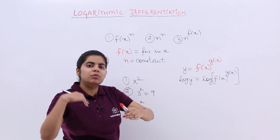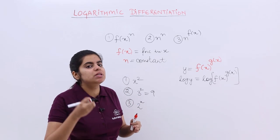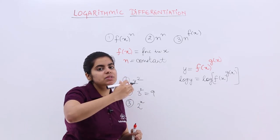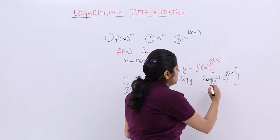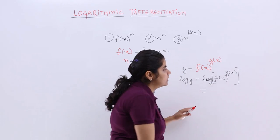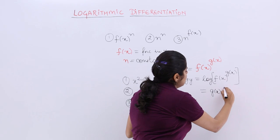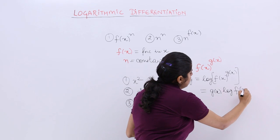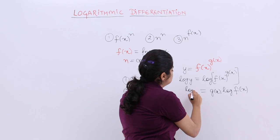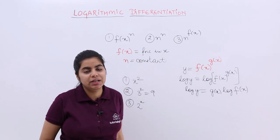Now you know what formula? Log m raised to the power n. Wherein m raised to the power n, so the power comes outside. So it will come forward. So it becomes g(x) log f(x) and here it is still log y. So this is how it has to be done.